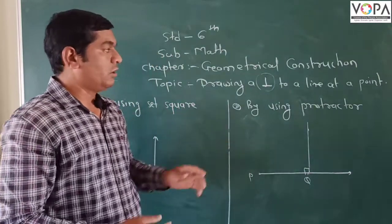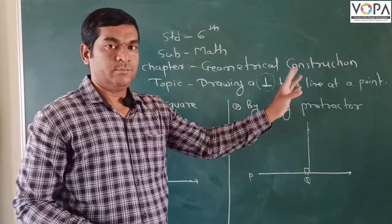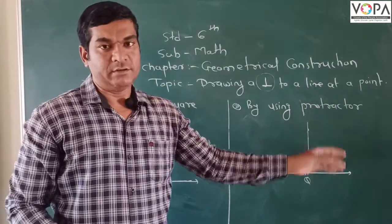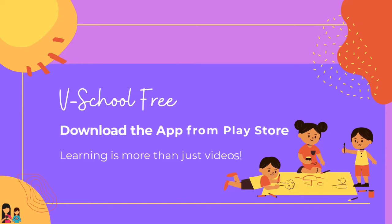So in this way we will draw a perpendicular to a line at a given point by using set square and by using protractor. Thank you.